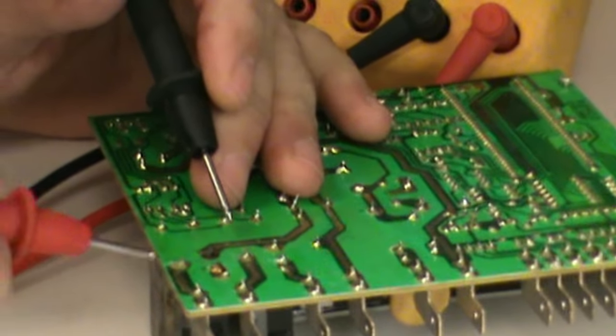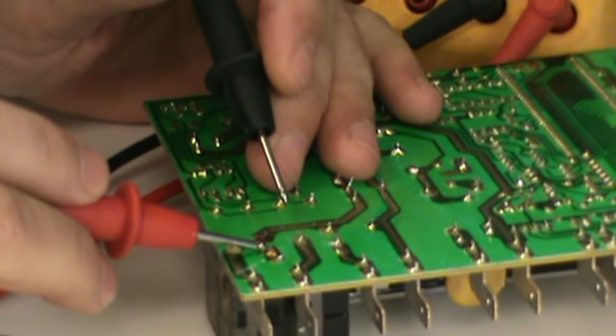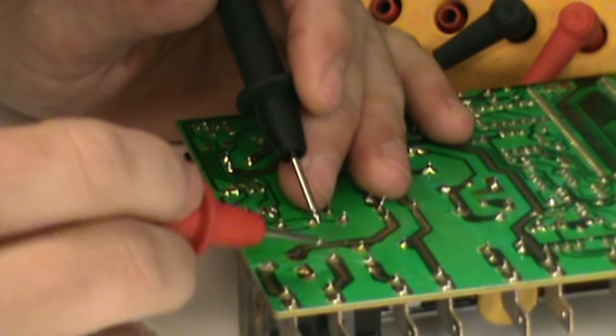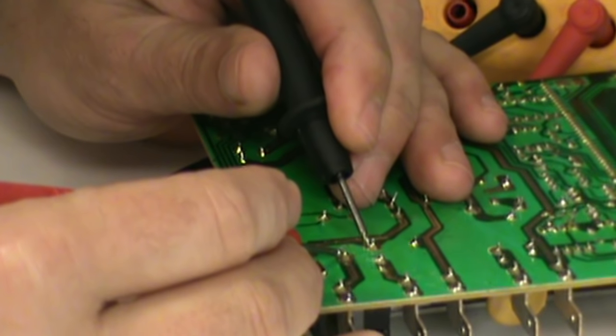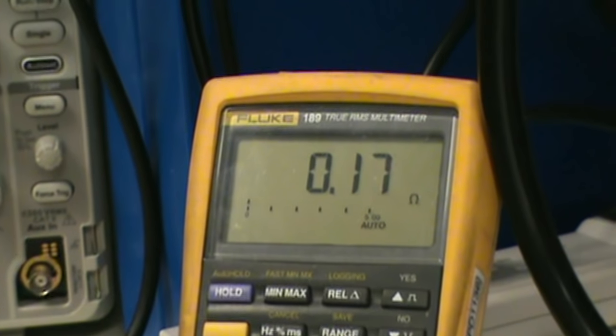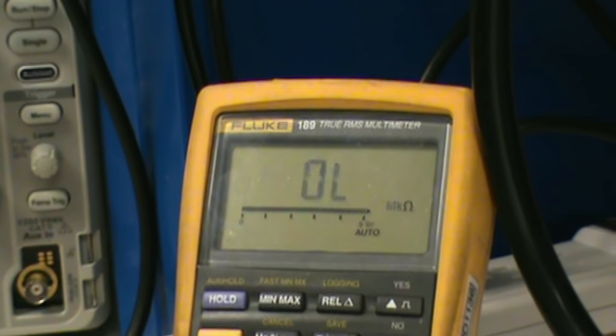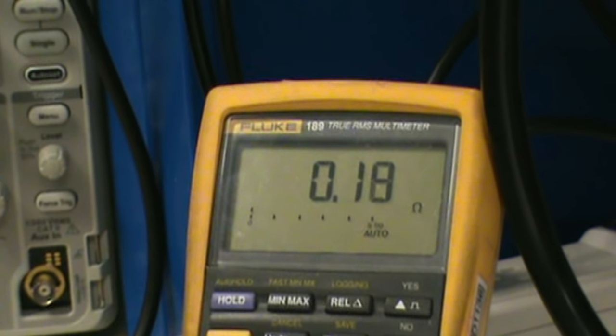Down to the relay. These are form C relays, you've got a common, normally closed, normally open contact. So we're going to go over here to this relay here that's not so badly baked. Here's the normally closed. If you look at the meter, you've got about 0.1 ohms open, closed, so that one's okay.